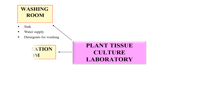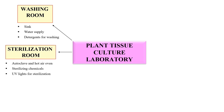The next area should be the sterilization room, because in Plant Tissue Culture experiments each and everything you use will be properly sterilized. For sterilization you must have a separate room, and in that sterilization room you should have sterilizing instruments and chemicals — like autoclave, hot air oven, various sterilizing chemicals, and UV lights for sterilization.